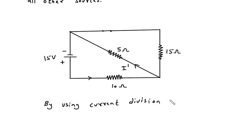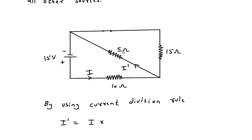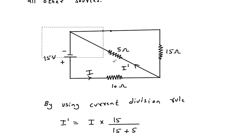By using the current division rule, let's say this is total current I. I prime is equal to total current into the opposite branch resistance. The opposite branch to this 5 ohm is 15 ohm, so 15 ohm divided by 15 ohm plus 5 ohm. First we have to find I to find the value of I prime.